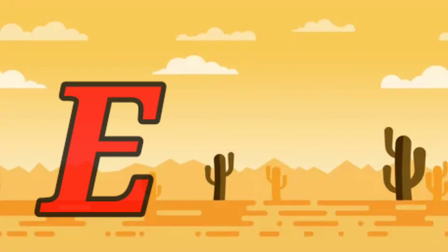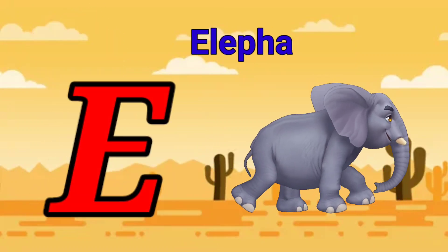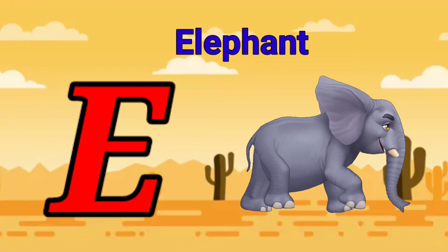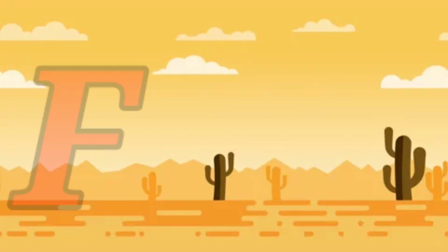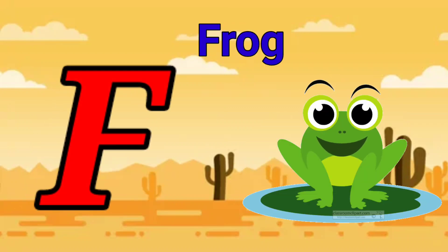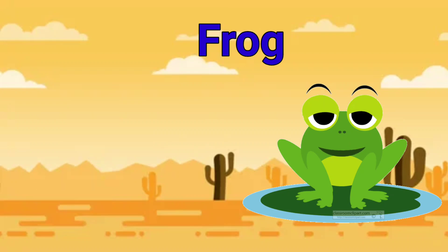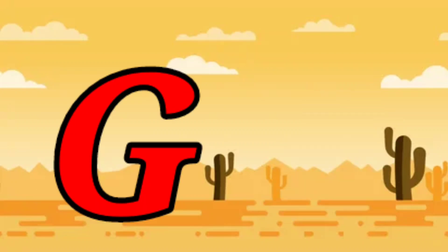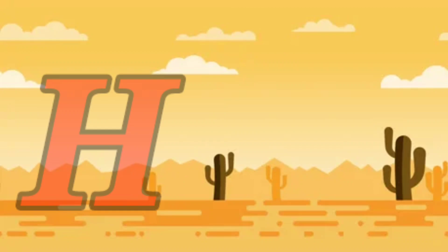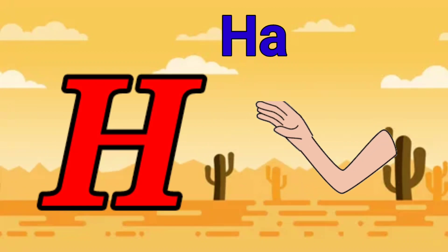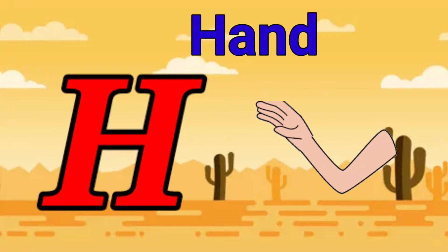E is for elephant, e-e-elephant. F is for frog, f-f-frog. G is for goat, g-g-goat. H is for hand, h-h-hand.